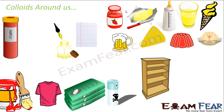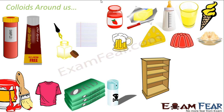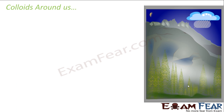Insecticides are colloids. The newspaper ink, paper — everything is a colloid. The paint we use to paint our houses is a colloid. Shaving cream is a colloid. Gemstones are colloids. The sky is blue, and in the early morning and late evening it appears orange, because the sky is a colloid — dust particles and water droplets suspended in air, called aerosols.